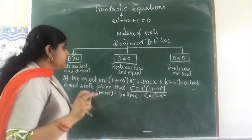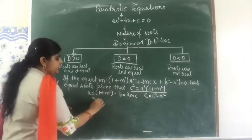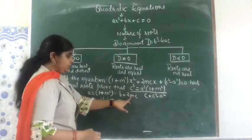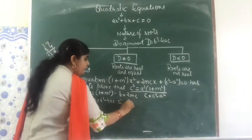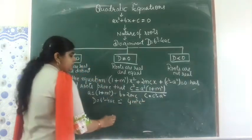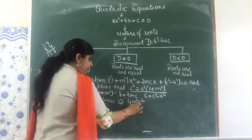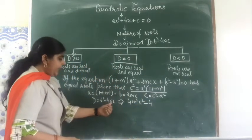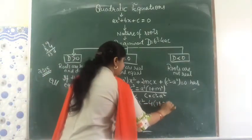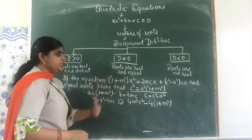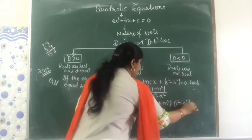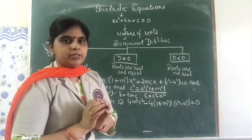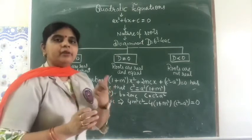Next, we find D = b² - 4ac. Substituting: that is (2mc)² - 4 × (1 + m²) × (c² - a²), and this should be equal to 0 because it is given that the equation has real and equal roots.